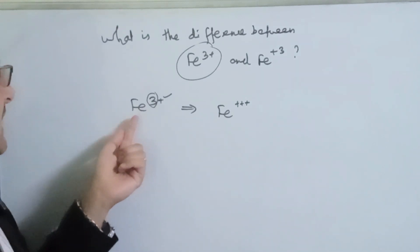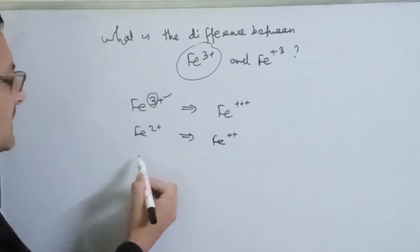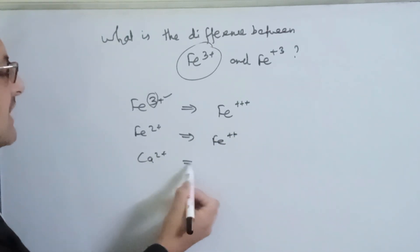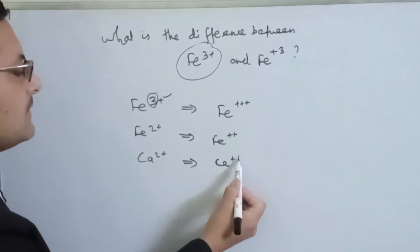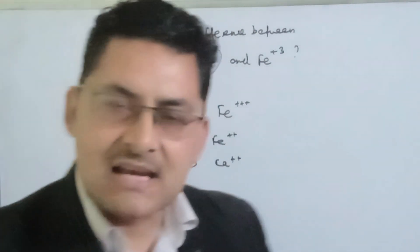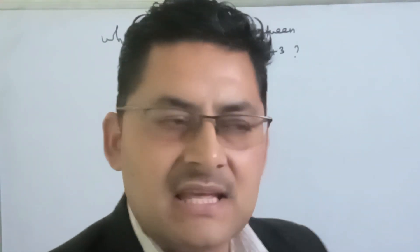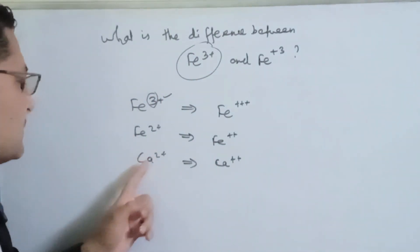We can write Fe²⁺ as Fe++, and Ca²⁺ as Ca++. We can write the number and sign, or we can write the number to indicate the charge.